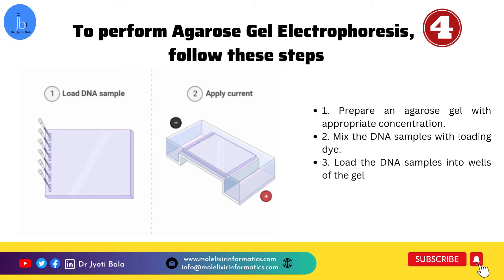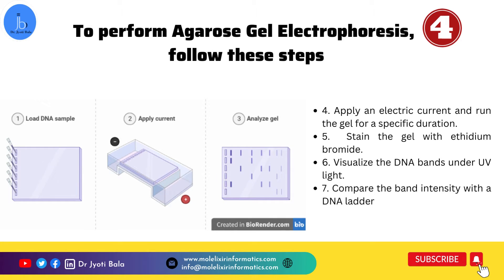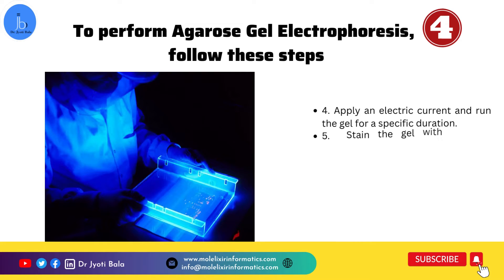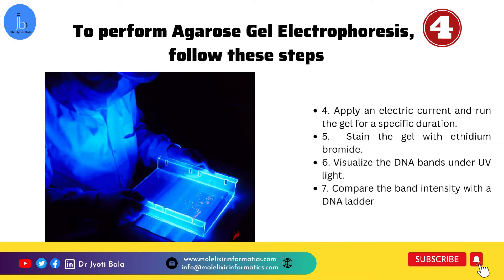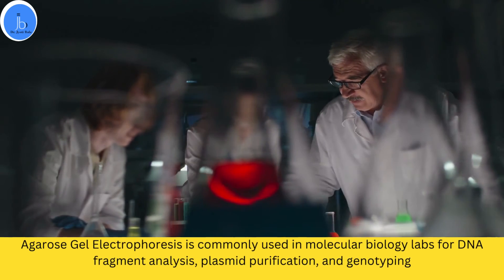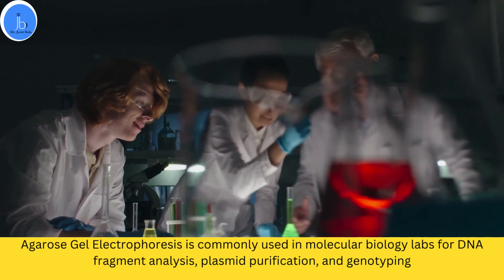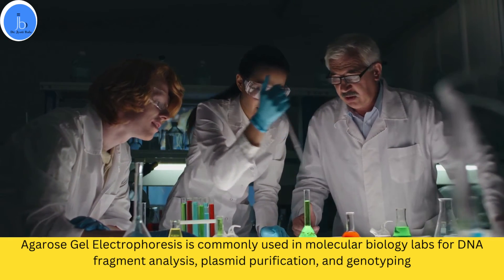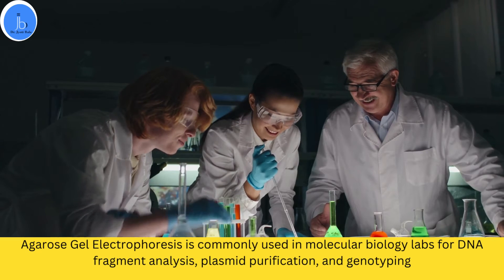The key steps in agarose gel electrophoresis are: prepare an agarose gel of suitable percentage with appropriate concentration, mix the DNA sample with loading dye, load the DNA sample into the wells, apply an electric current and run the gel for a specific time. Once the run is done, stain the gel with ethidium bromide and visualize the DNA bands under UV light. Finally, compare the band intensity with a DNA ladder of known concentration to estimate the sample DNA size. Agarose gel electrophoresis is commonly used in molecular biology labs for DNA fragment analysis, plasmid purification, genotyping, and cloning. It helps scientists verify the success of DNA extraction and check the integrity of DNA samples.